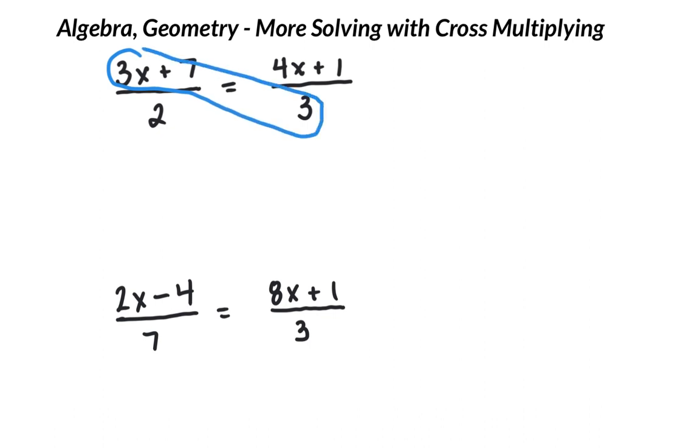You have to make sure and do both numbers. 3x times 3 is 9x, and 7 times 3 is 21, equals. And then we do the other way, like that. 2 times 4x is 8x, and 2 times 1 is 2.